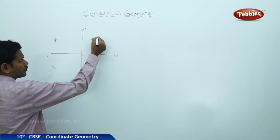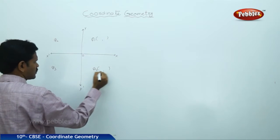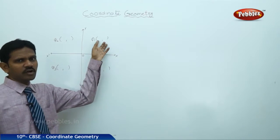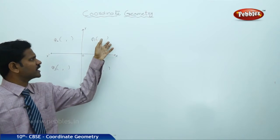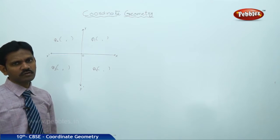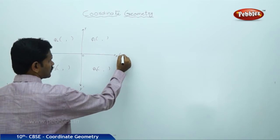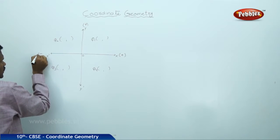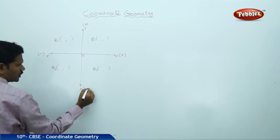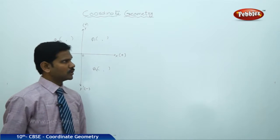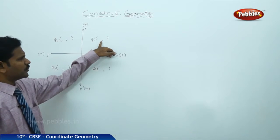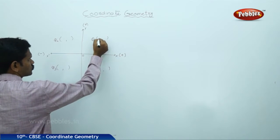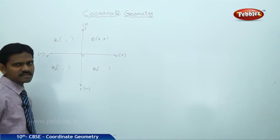A point in a quadrant is an ordered pair. The first coordinate is called the x-coordinate and the second is called the y-coordinate. In Q1, both x and y are positive — that is, x-positive and y-positive, so Q1 contains plus, plus.